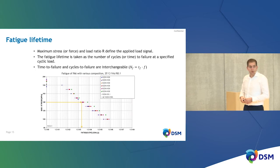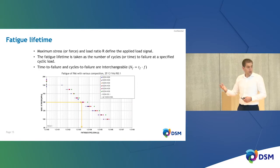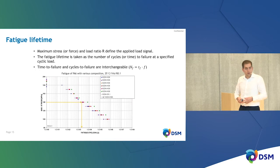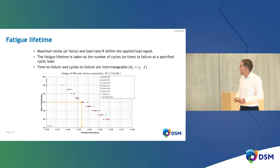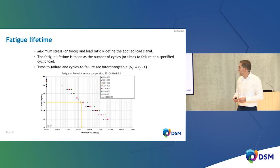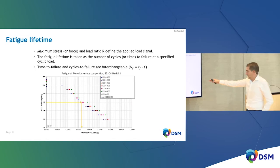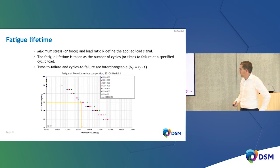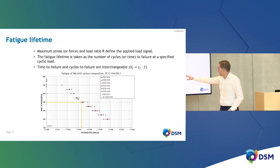You choose an R value that mimics your application, apply a certain maximum stress or force using nominal values, and measure fatigue life as number of cycles or time — both are interchangeable. This example shows a polyamide 6 with various compositions measured at room temperature, 1 Hz, R = 0.1 — a typical loading range. Plotting maximum stress versus fatigue cycles shows that at 140 MPa you expect a lifetime of approximately 2000 cycles, whereas for another composition, a factor of four improvement is achieved.